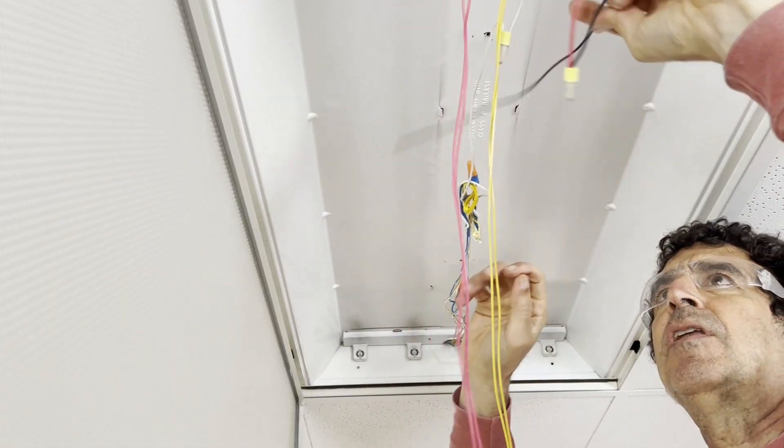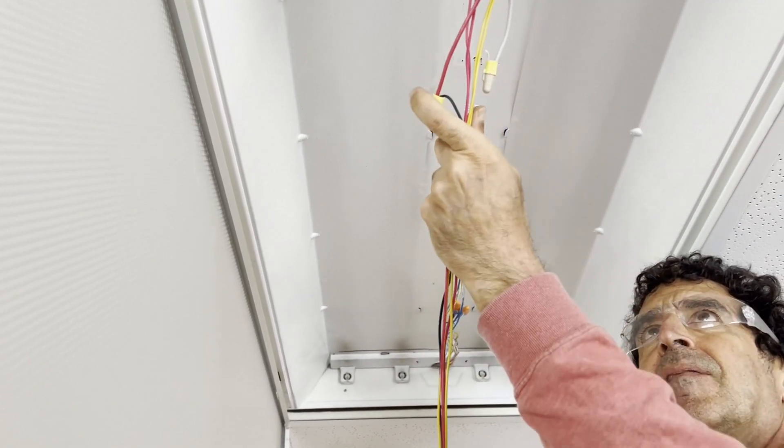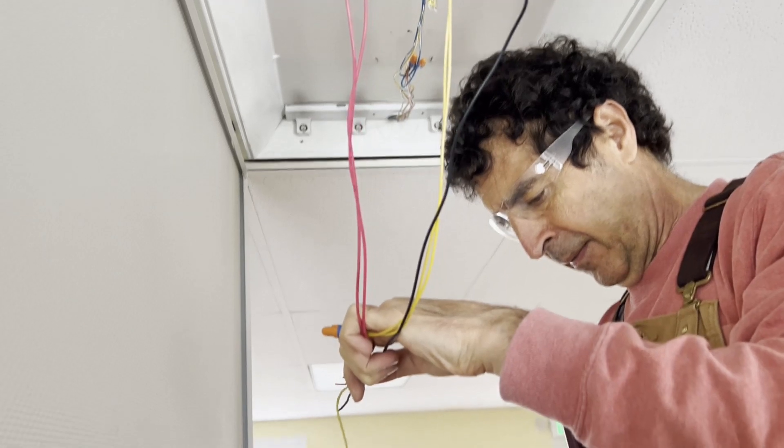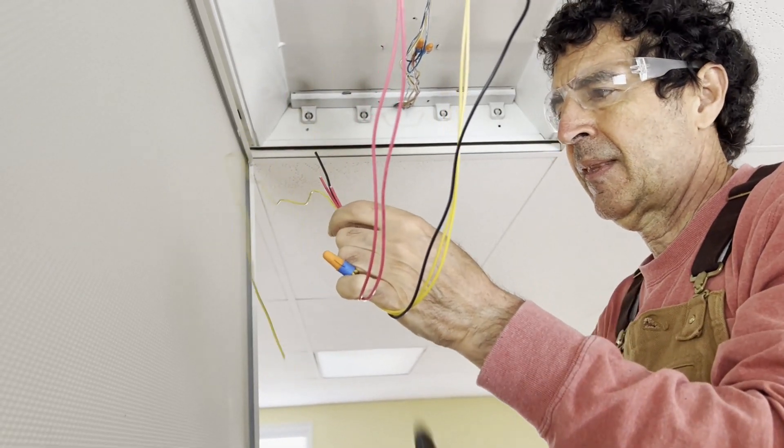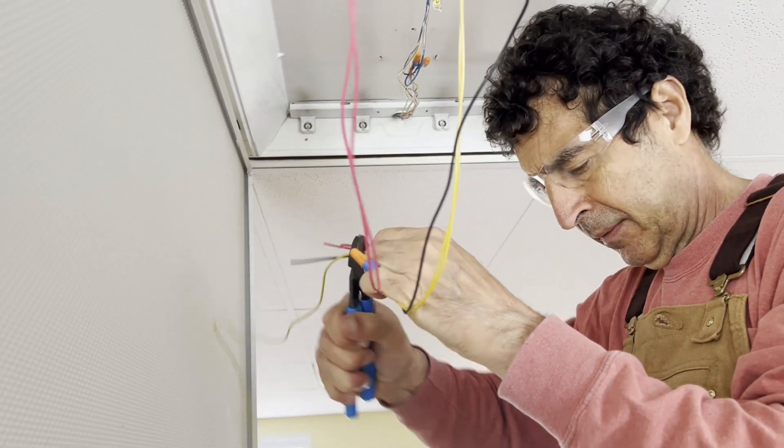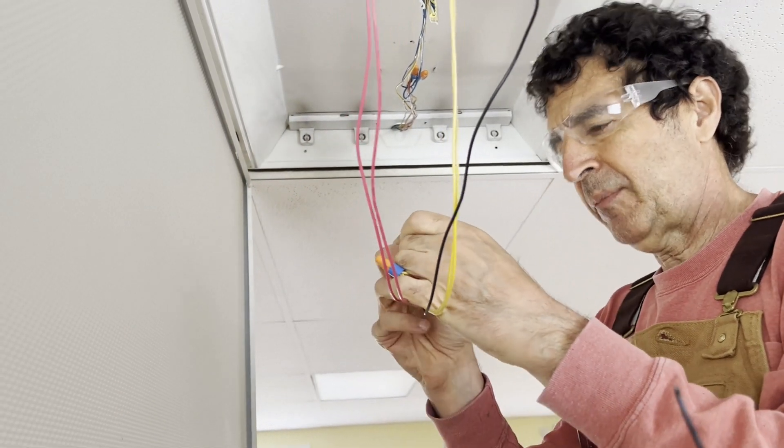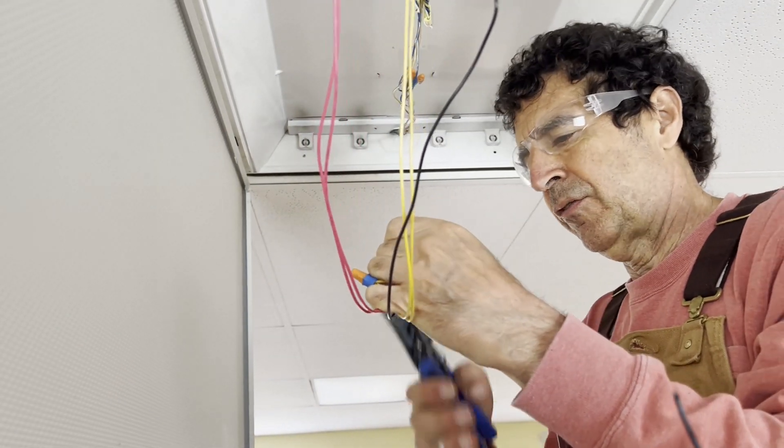The neutral. Now we just need to put all the hot wires together, which would be these four. Cut them all the same length, strip them.